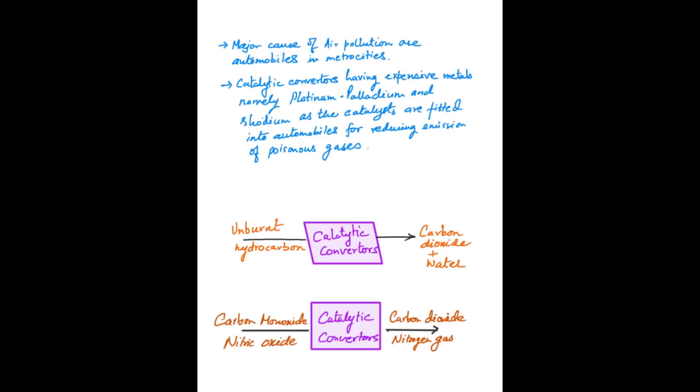Apart from exhaust from industry or thermal power plants, the major causes of air pollution in metropolitan cities are automobiles. Due to the large increasing number of automobiles, urban cities are facing a huge problem of air pollution. To curb automobile air pollution, many measures have been taken, and among these, the catalytic converter is one of them.